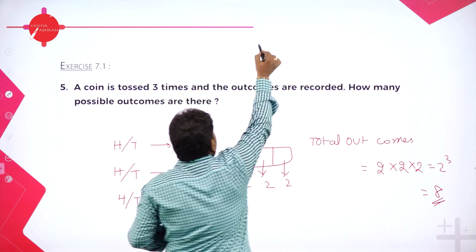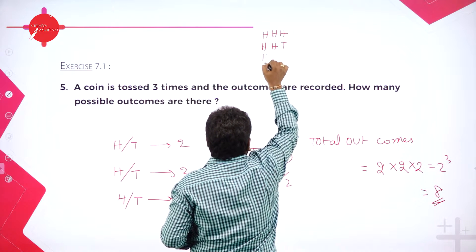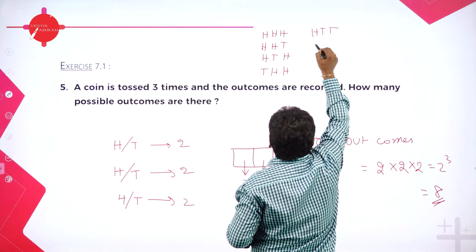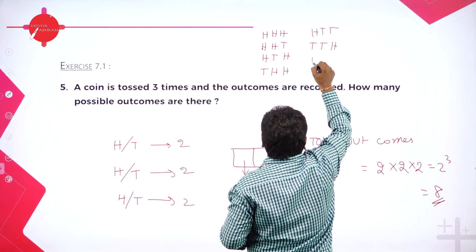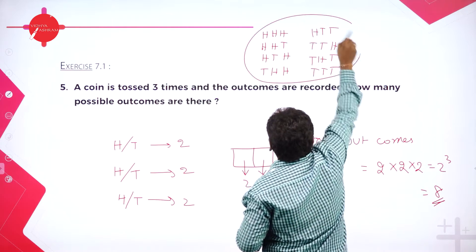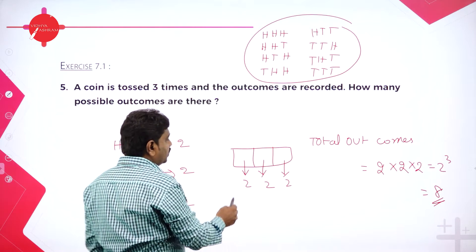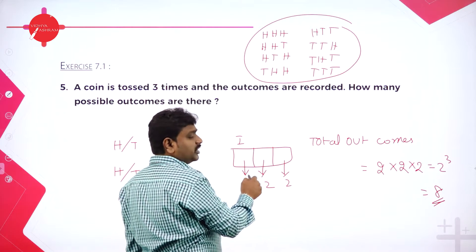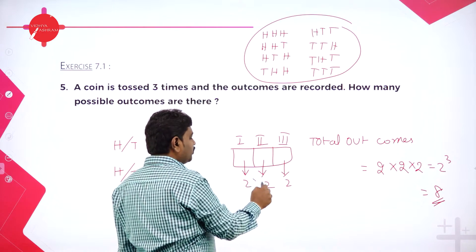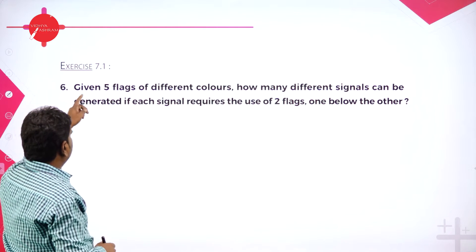The eight outcomes are: HHH, HHT, HTH, THH, HTT, TTH, THT, TTT. But you don't need to count like this. By the fundamental principle of counting: first outcome has two possibilities, second has two, third has two — so 2 into 2 into 2 equals eight.